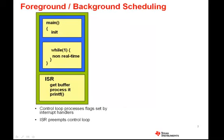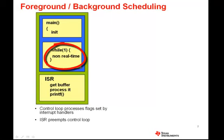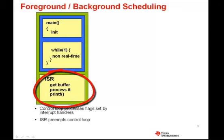A common way to implement an embedded system is with what's called a foreground/background scheduling scheme. With this technique, there are two basic priority levels that software executes at. When the system starts up, it performs some initialization, including setting up peripheral devices and enabling interrupts. After initialization, execution drops into a loop where lower priority background processing is done. When a peripheral device asserts an interrupt, an interrupt service routine executes that buffers data and does high priority processing, including setting flags to shape the background process. Since this ISR preempts the background processing, it runs at a higher priority and is called the foreground process.